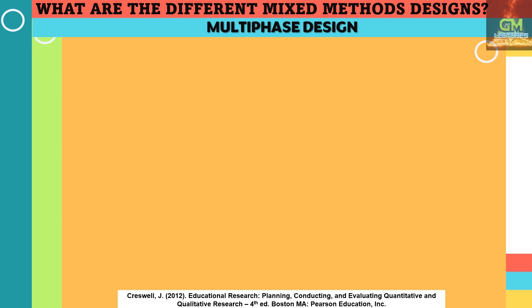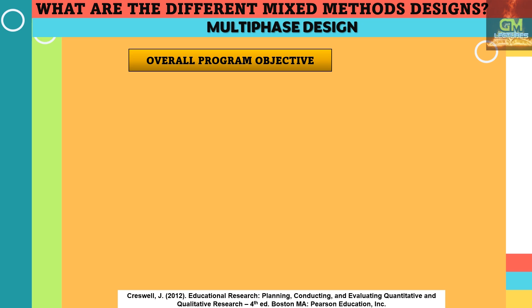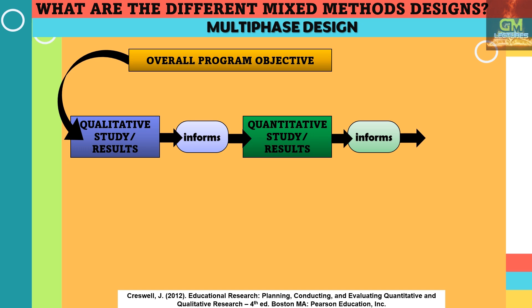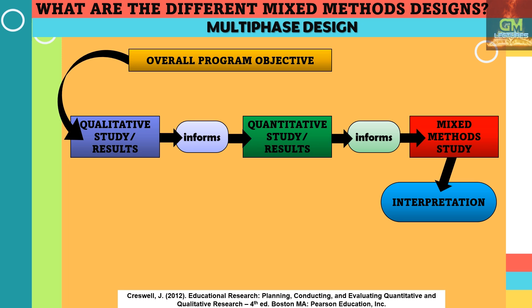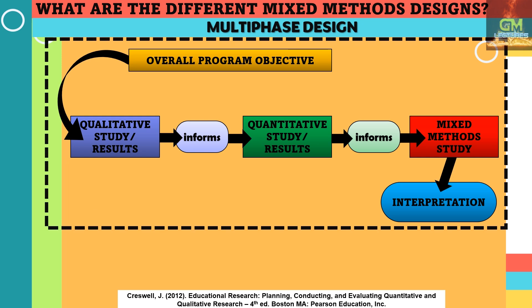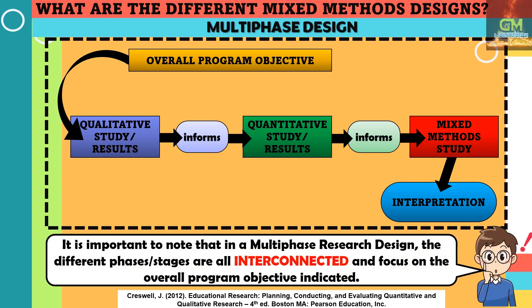To help you understand the process of a multiphase design, let's look at this general example. We start with an overall program objective. From there, we conduct different studies or phases to help us understand and achieve the stated objective. For this example, we start with a qualitative study, which gives us information for the conduct of a quantitative study. From there, the information gathered leads to the conduct of a mixed-method study, which leads to the final interpretation. All these processes or phases are encased in one general objective, and in a multiphase design, the different phases are all interconnected and focus on the overall program objective.